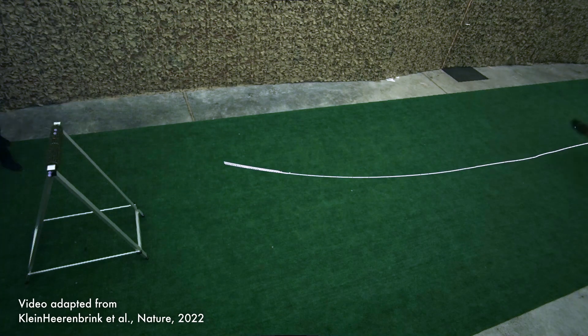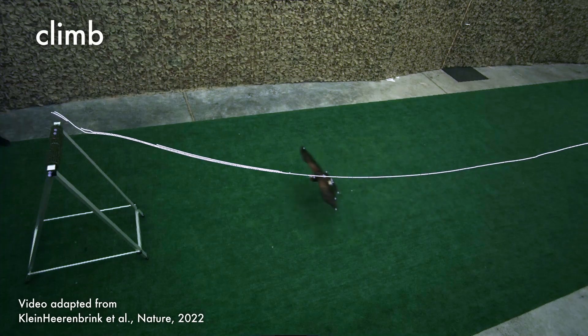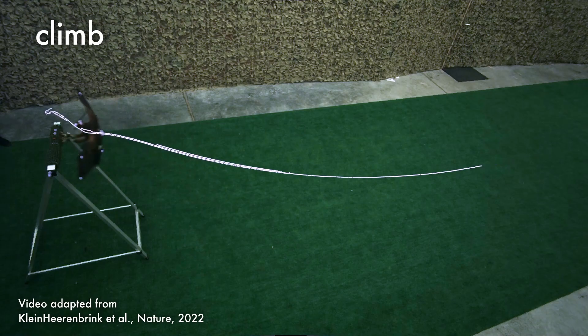While robotics researchers commonly assumed that birds minimize their flight time when perching, a recent study on Harris Hawks hypothesizes that instead these birds minimize the distance flown at high angles of attack.